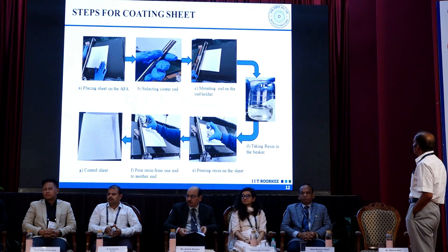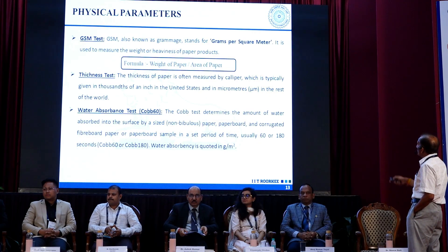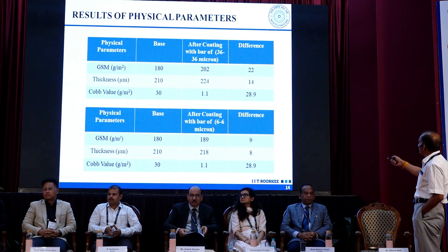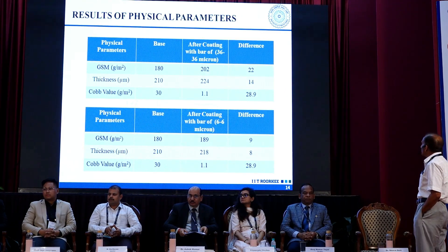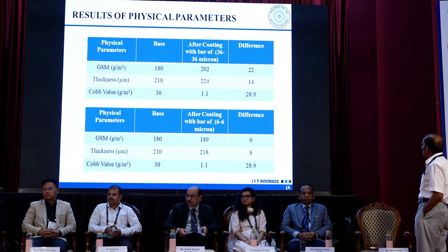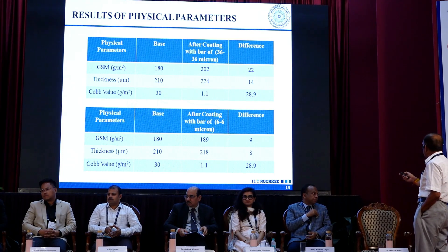These are the steps for coating the sheet, and we have used a rod coater. These are the physical parameters tested: GSM, thickness, and water absorbance value — that is the Cobb value. After coating, the Cobb value reduces from 30 to 1.11. In one set, the sheet thickness is about 6 microns, while in the first case the coating thickness is 36 microns.